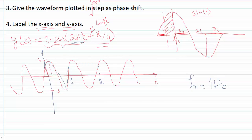That's the waveform for 3sin(2πt + π/4). I hope my explanation makes sense. If you have any questions or a particular example you'd like me to solve, just leave it in the comment section and I'll get back to you. Thank you for listening.